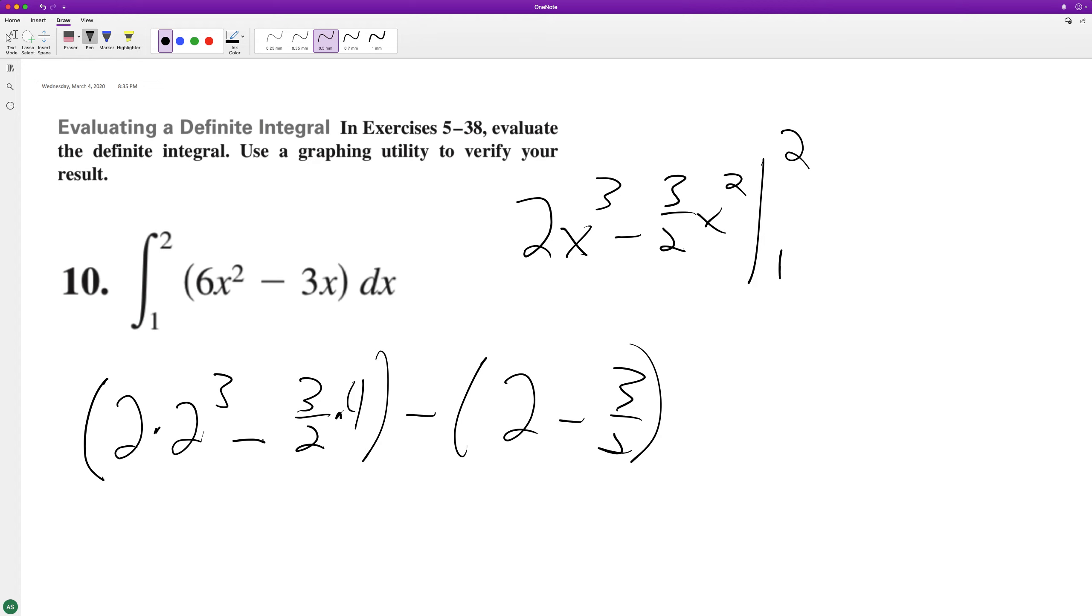All right, so we get 16 minus 6, which is going to be 10, minus this is 3 halves, so it's minus 1 half, which gives us 9 over 2.